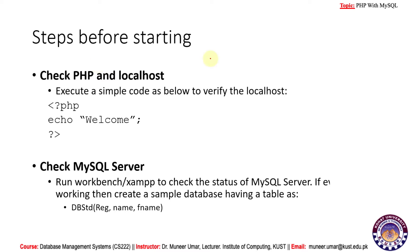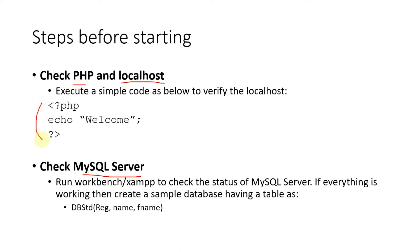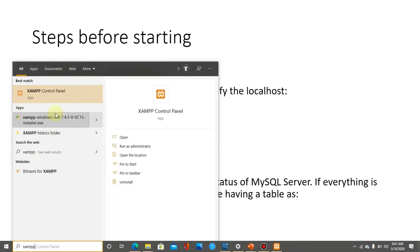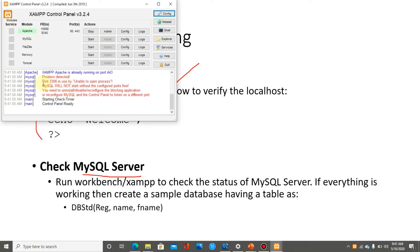Before we start, first check that the localhost and MySQL server are running, then execute a sample PHP code to confirm the working condition of our system. For localhost, open the XAMPP control panel — here you can see the Apache server. If it is not running, click the Start button and it will begin running.